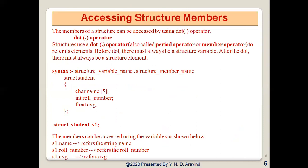The members of a structure can be accessed by using a dot operator, also called the period operator or member operator. To refer to any element in the structure, before the dot there must always be a structure variable, and after the dot there must always be a structure member. In this example, structure student has three members: name, roll number and average. With structure variable S1, we access them as: S1.name refers to the name string, S1.rollnumber refers to the roll number, and S1.average refers to the average.